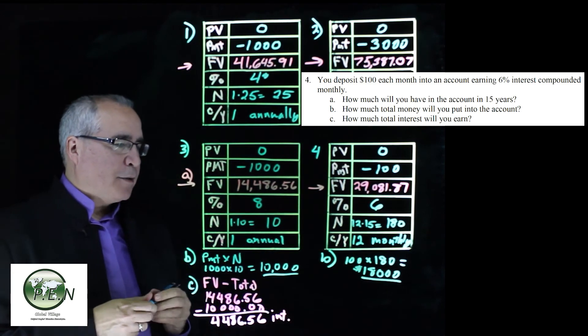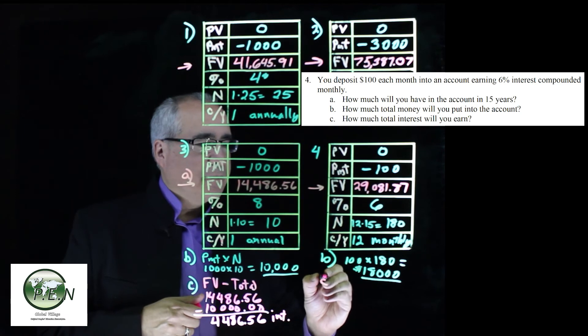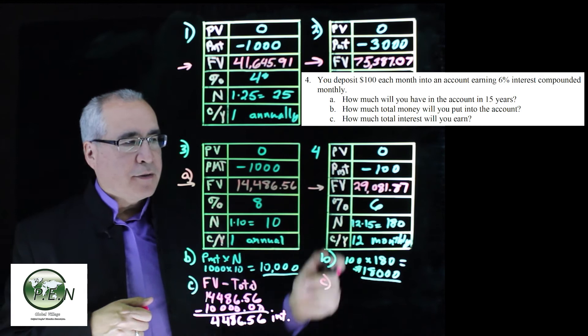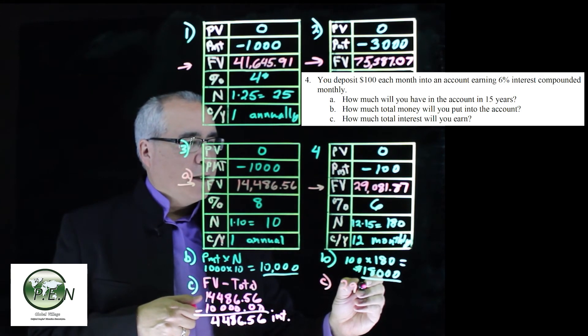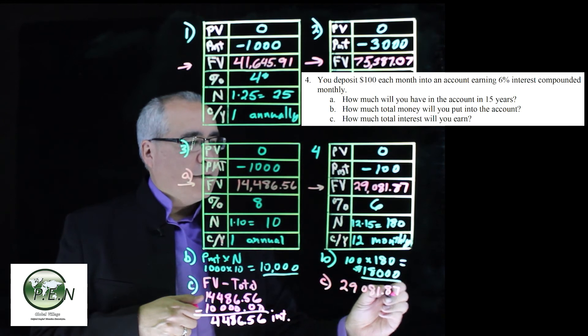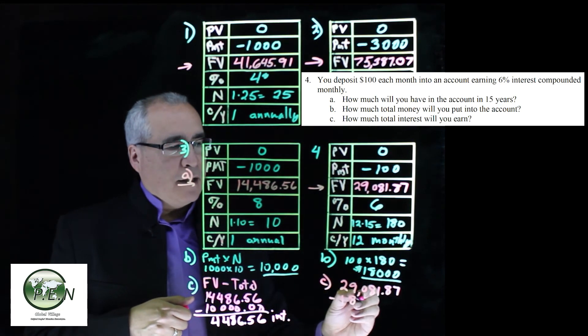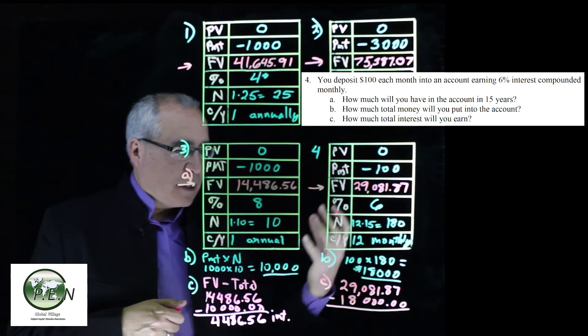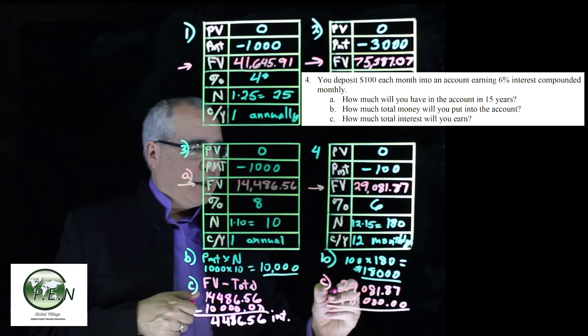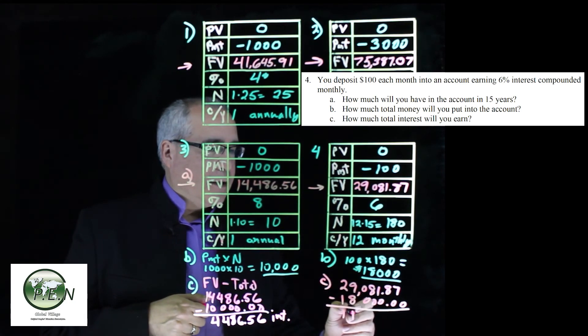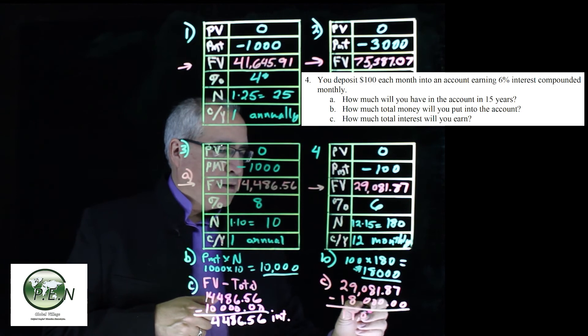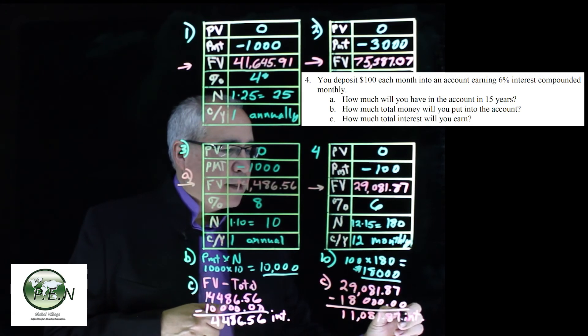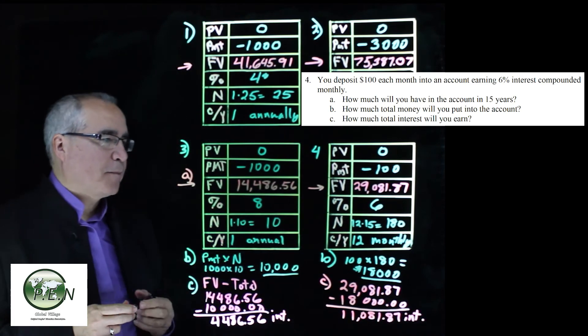And this will allow us to answer the C question, which is how much interest did we get. Well, anything above the $18,000 is interest. So we take our $29,081.87, we subtract off $18,000, which is what we put into the account. And we got that the interest that came back to us is $11,081.87 in interest.